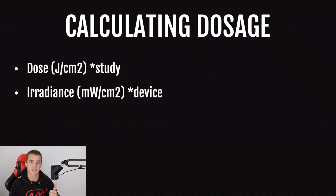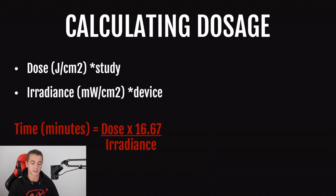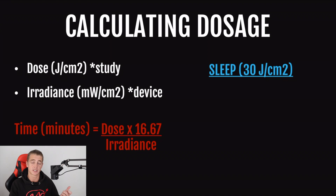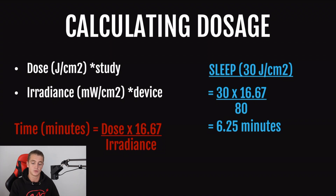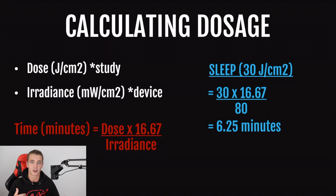Once you've got those two things — the dose from the study and the irradiance of your device — you can jump straight into the calculation. It's really simple: time in minutes equals dose times 16.67, divided by irradiance. That fixed number is just a standard conversion factor. For example, there's a nice study on sleep using red light therapy that used 30 joules per centimeter squared. Using this calculation — 30 times 16.67, divided by an irradiance of 80 milliwatts per centimeter squared — you get an answer of 6.25 minutes. The main challenge with this manual method is finding that dose value in joules per centimeter squared, because you can spend 10 to 15 minutes on a study only to find they don't actually report this metric.